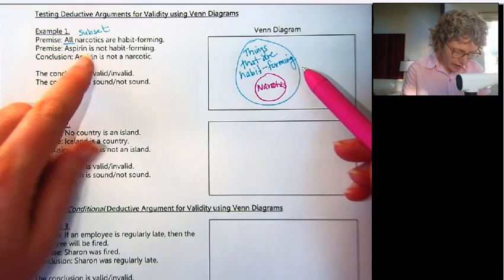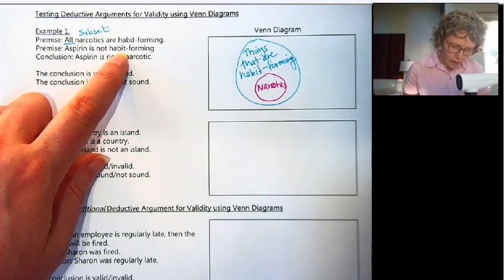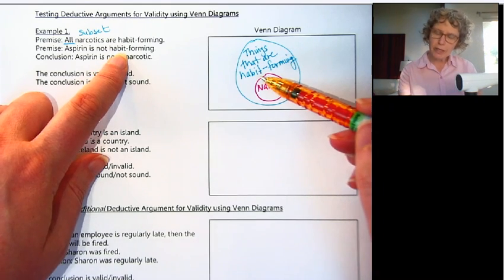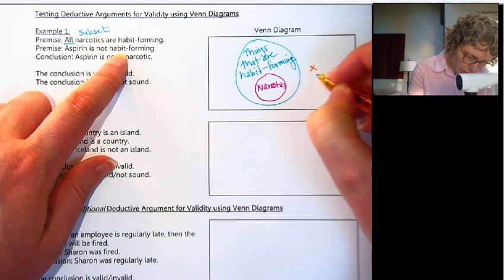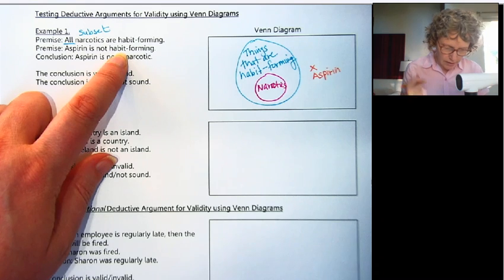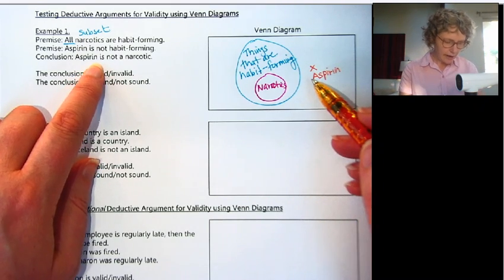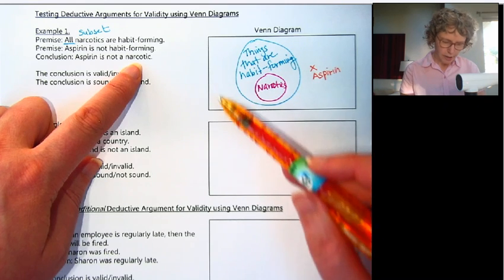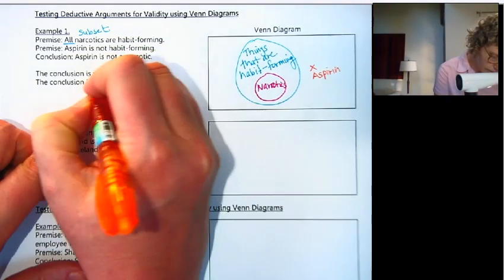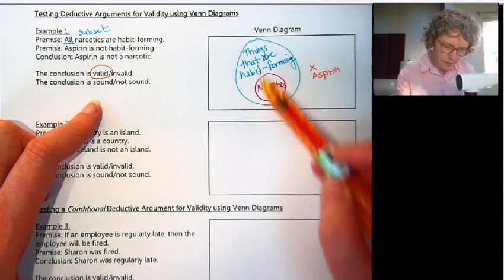Our second premise is aspirin is not habit-forming. Where would aspirin go? This circle represents things that are habit-forming, so aspirin needs to go outside. I'll label that with an X because it's one specific thing. Now let's look at our conclusion: aspirin is not a narcotic. Aspirin is not in the narcotic circle, so this is a valid argument.